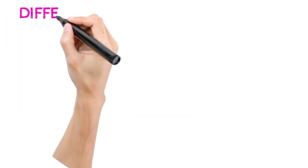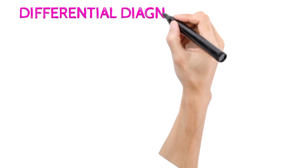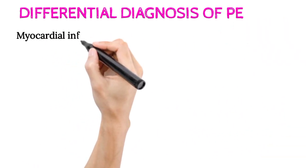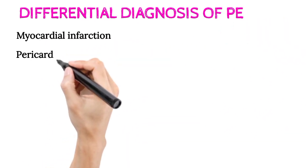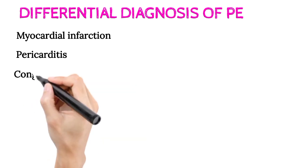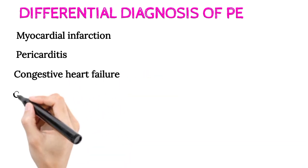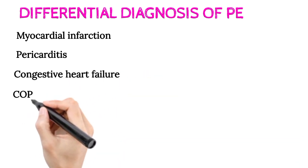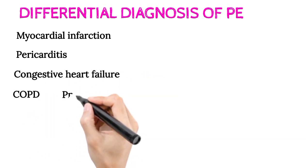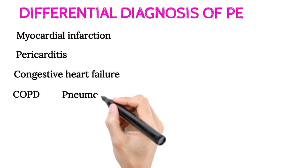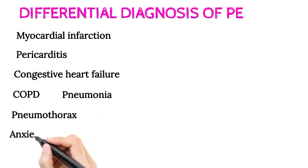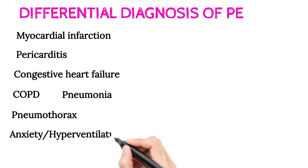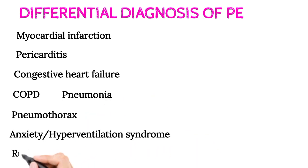Differential diagnosis of pulmonary embolism includes: myocardial infarction, pericarditis, congestive heart failure, chronic obstructive pulmonary disease, pneumonia, pneumothorax, anxiety, hyperventilation syndrome, and rib fracture.